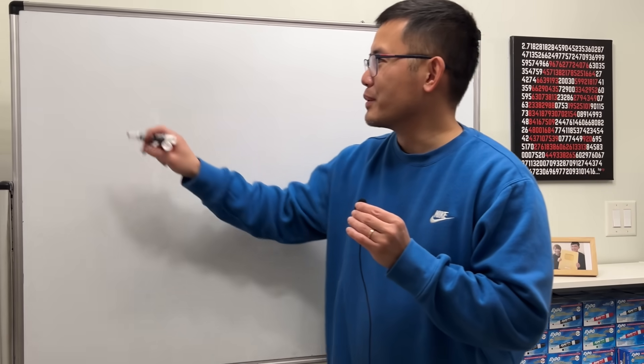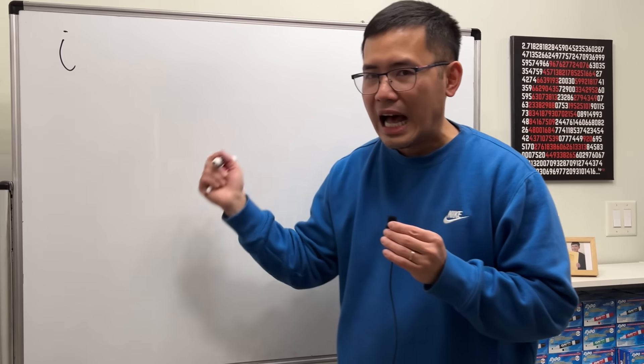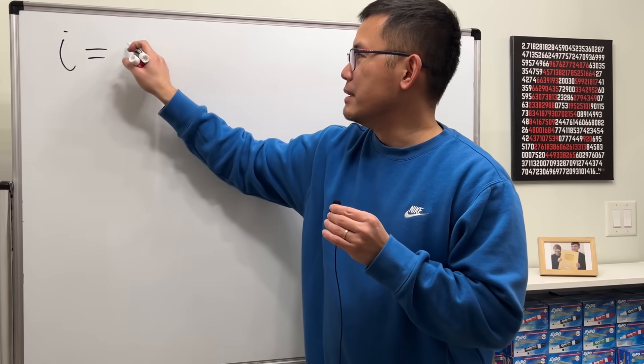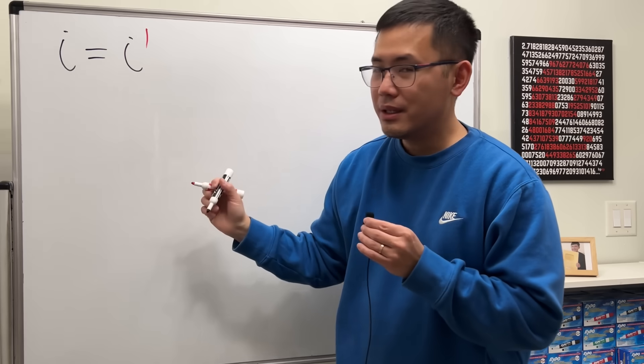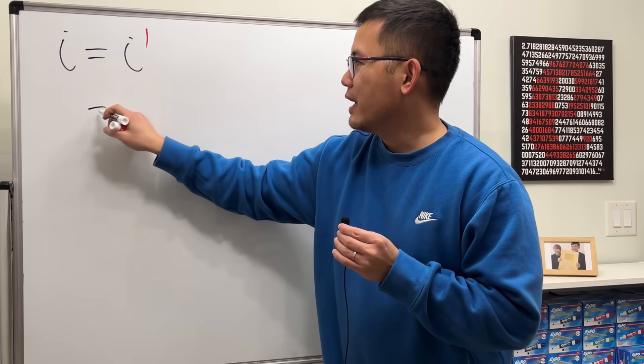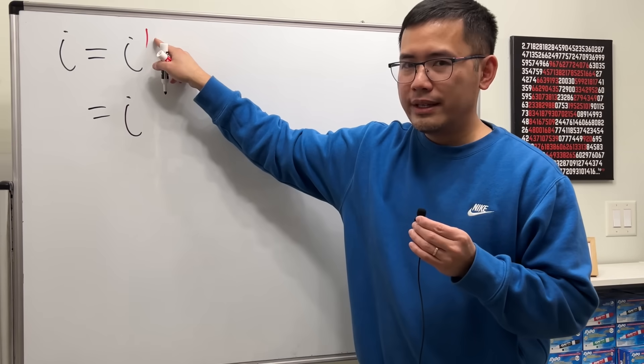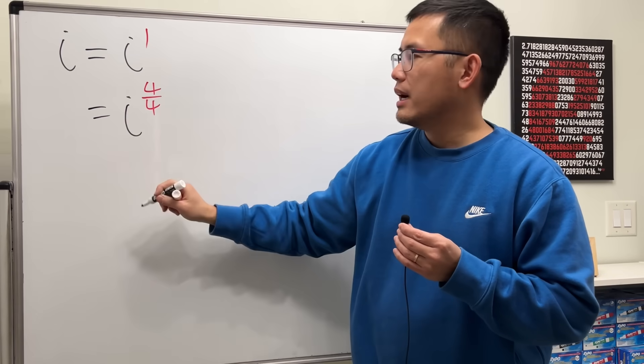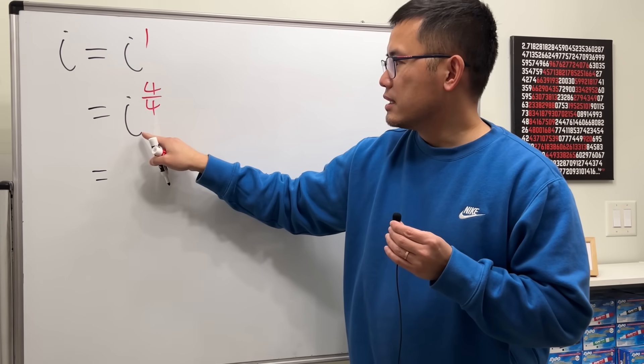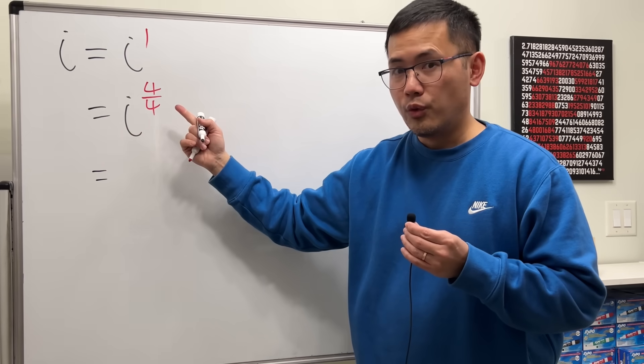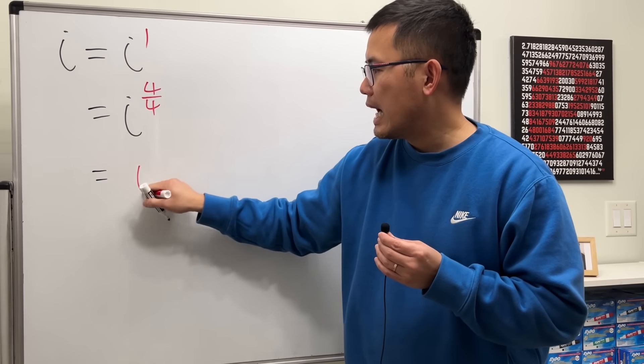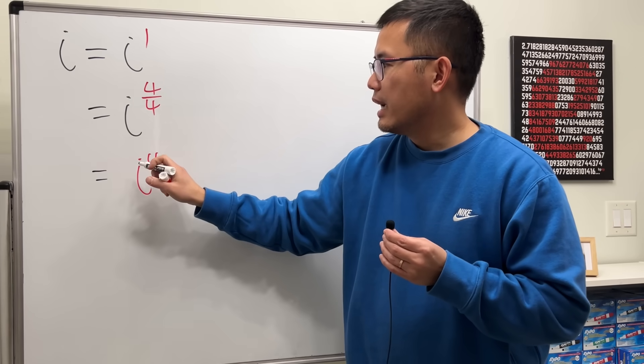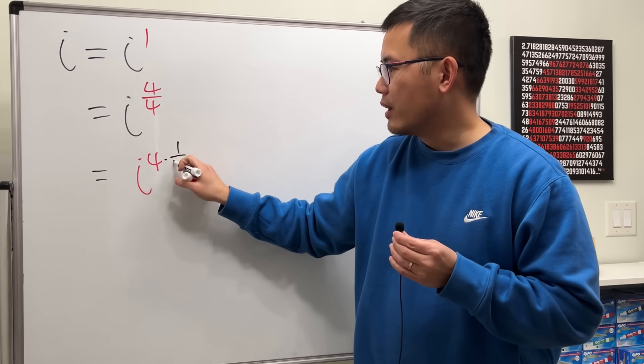So have a look right here. Let's start with i, and of course this is the same as i to the first power, yeah. Okay, I'm going to write the one as four over four, yeah. And then next I'm going to do this. This is the same as saying one over four times four, right? But I'm going to put i to the fourth power first, and then times one over four, yeah.